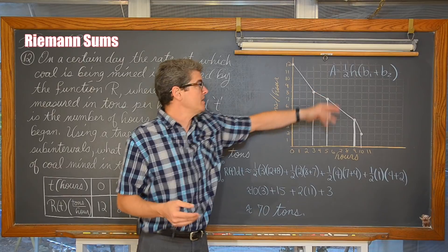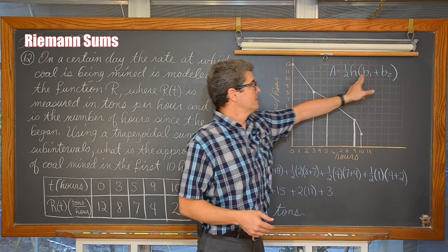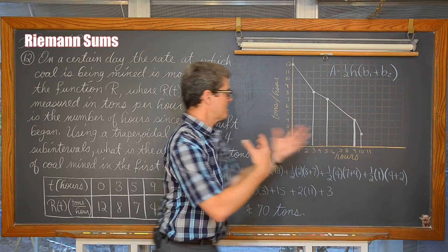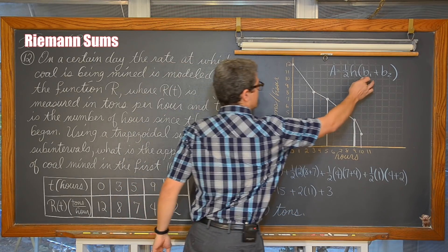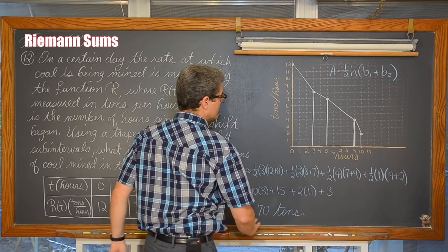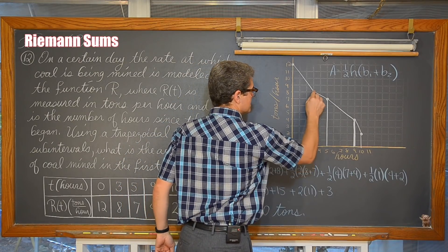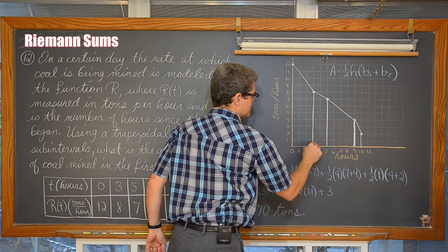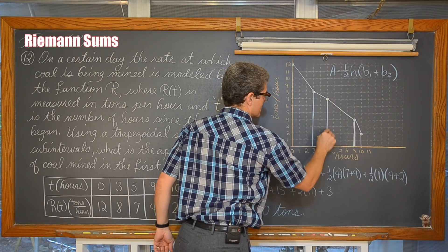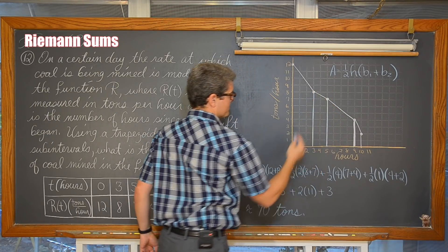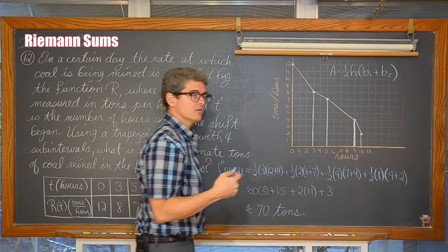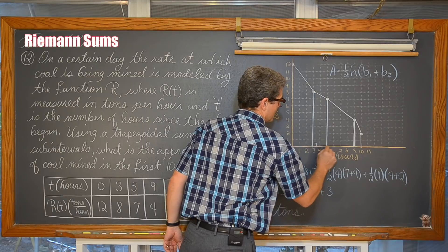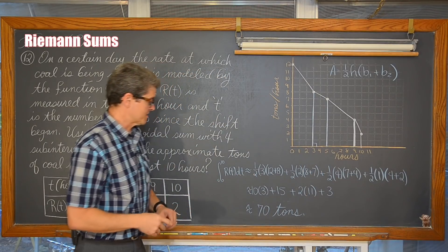Don't forget, the area of a trapezoid is one-half the height times base one plus base two. Now that we have this drawn, we see that the base one and base two are those vertical distances, the parallel sides whose lengths are determined by the function. Then we have our height between each of these trapezoids.